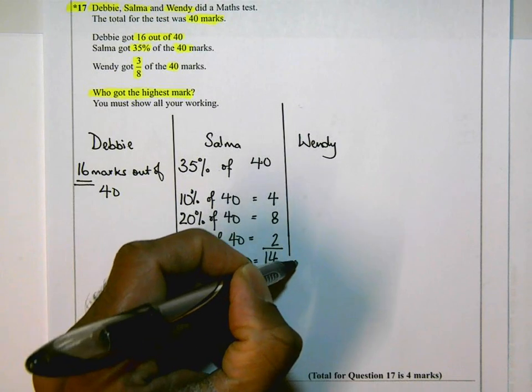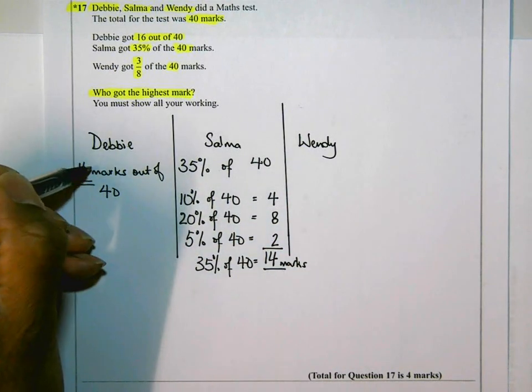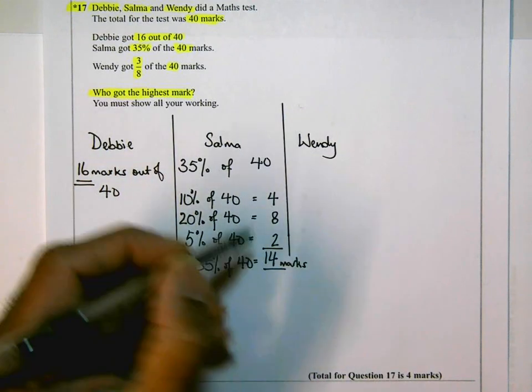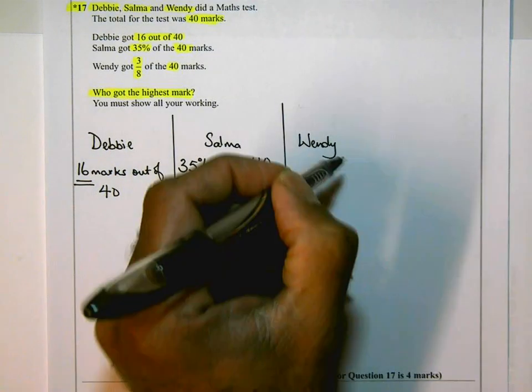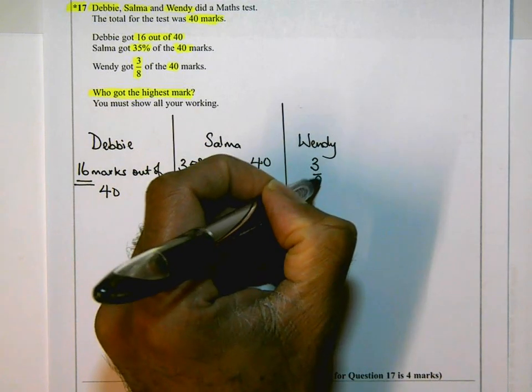So far Debbie is still in the lead. Debbie got 16 out of 40, Salma got 14 out of 40. Wendy got 3/8, 3/8 of 40.